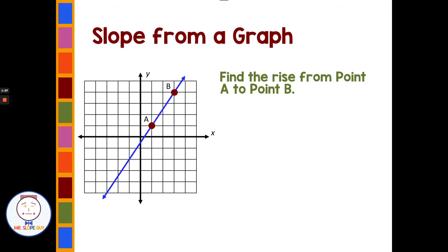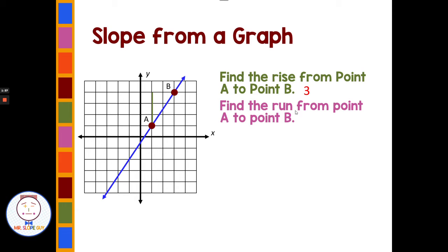If we're given a graph of this blue line with points given, we want to find the rise from point A to point B. The rise is how much we're changing on the y-axis — going up or down from A to B. Counting up from A, I count three spaces, so we have a rise of three. For the run — the change on the x — I count one, two: two spaces for the run.